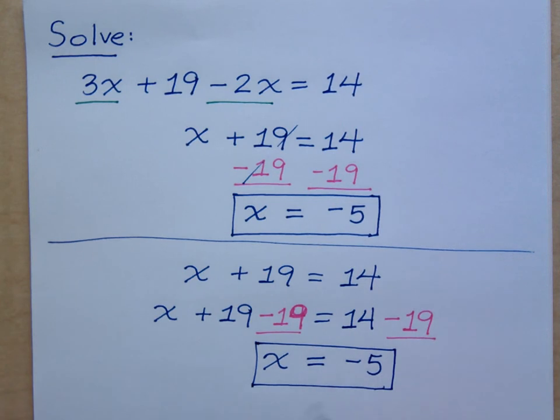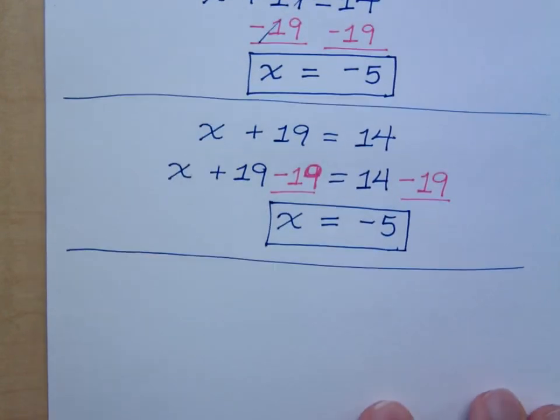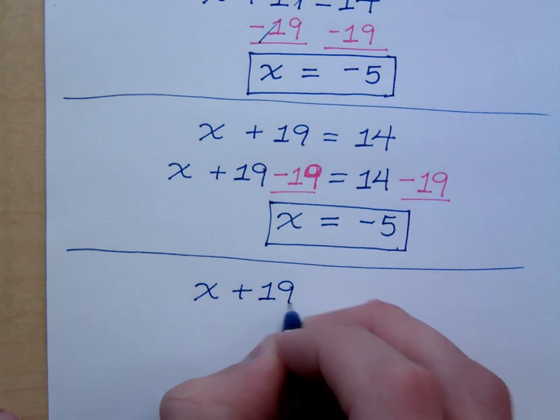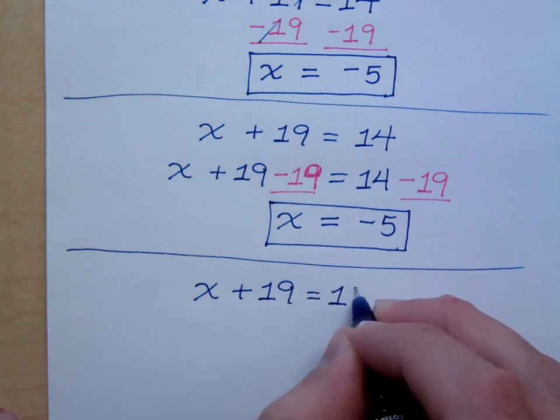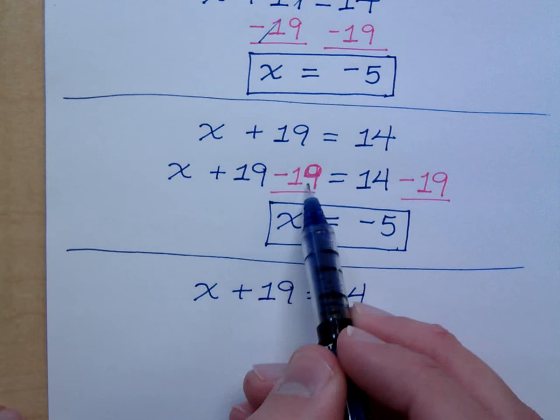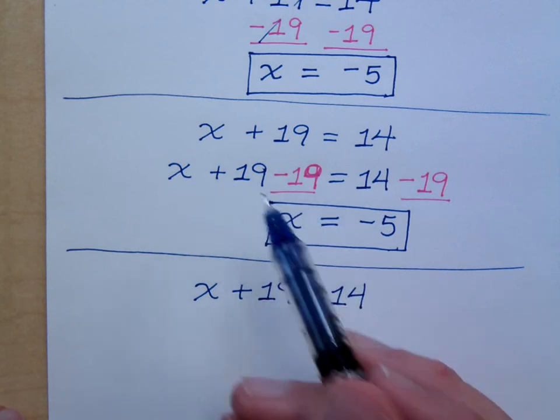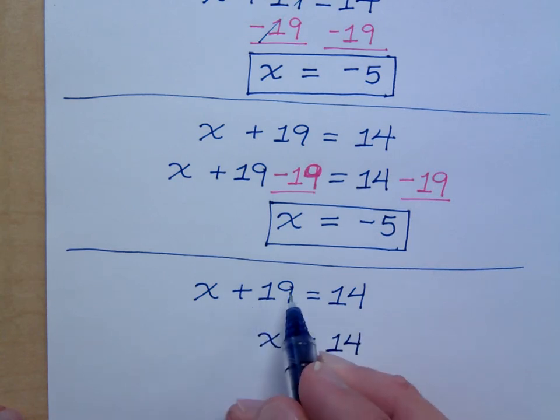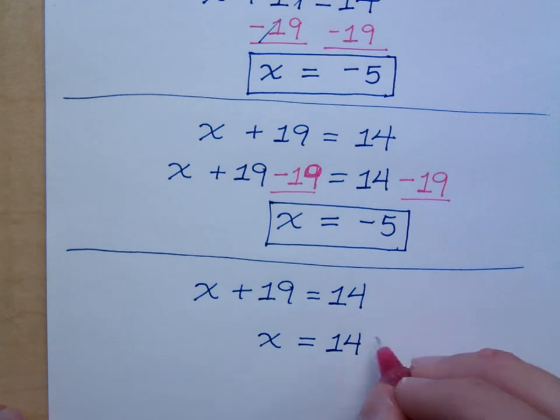Now, another way to show this work, very similar to what we have here, is the following. Now, you guys agree that I need to subtract the 19 to the other side, right? Now, I can show the work like I have here, where I'm actually showing the minus 19, or you can kind of do this in your head and go, you know what? I know that I need to subtract 19, and when I do, it's going to cancel with that, right? But I still want to show the work, so I'm going to show that I've got the minus 19 on the right side like that.